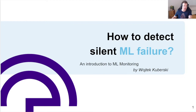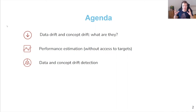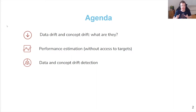Let's get started with the agenda. First, we're going to talk about two main reasons why machine learning models can fail — data drift and concept drift. I'll define what they are and how they can potentially impact performance. Then we're going to talk about how to assess your model's performance, why you need to do performance estimation, and why simply calculating performance is most often not possible because you don't have access to targets once you deploy your models to production. And then we're going to talk about root cause analysis — the reasons why machine learning models can fail — and the ways to pinpoint what actually changed and what went wrong. So we're going to talk about data and concept drift detection.